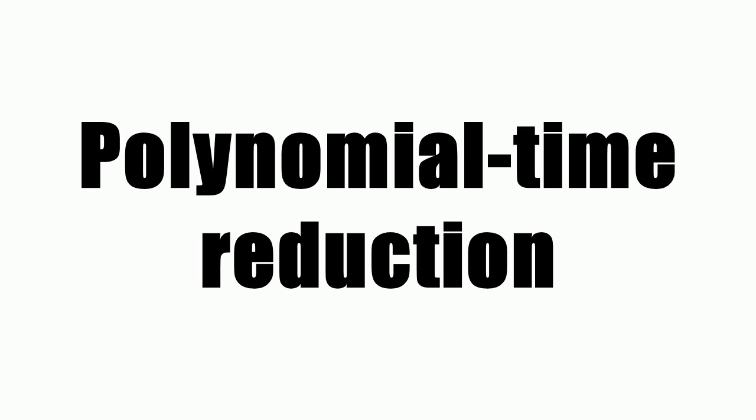A complete problem for a given complexity class C under a reduction is a problem P that belongs to C, such that every problem A in C has a reduction to P. For instance, a problem is NP-complete if it belongs to NP and all problems in NP have polynomial time many-one reductions to it. A problem that belongs to NP can be proven to be NP-complete by finding a single polynomial time many-one reduction to it from a known NP-complete problem. Polynomial time many-one reductions have been used to define complete problems for other complexity classes, including the PSPACE-complete languages and EXPTIME-complete languages.